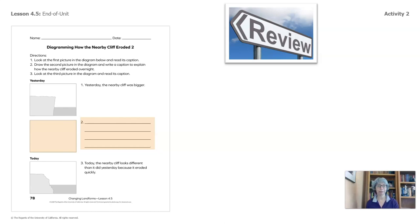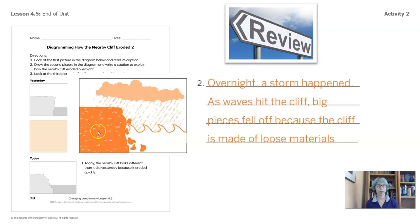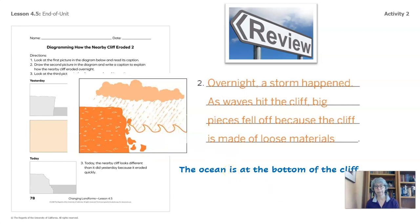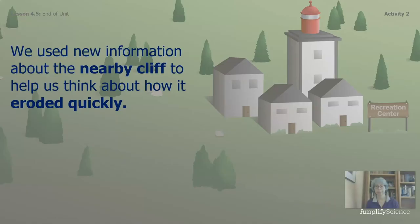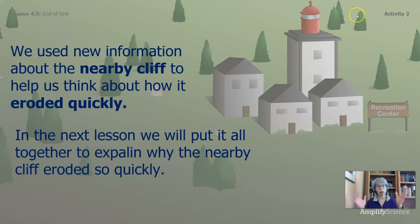Welcome back. Let's review. Some of you drew the cliff as big pieces of rock were coming off, and this happened overnight because some of you thought a storm came through — others drew rain coming in and gusts of wind and big waves crashing. You included that the ocean is at the bottom of the cliff and that's where the waves came from, and that the cliff is made of loose soil and that's where these big pieces of rock fell from. We used new information about the nearby cliff to help us think about how it eroded quickly. In the next lesson, we will put it all together to explain why the nearby cliff eroded so quickly.